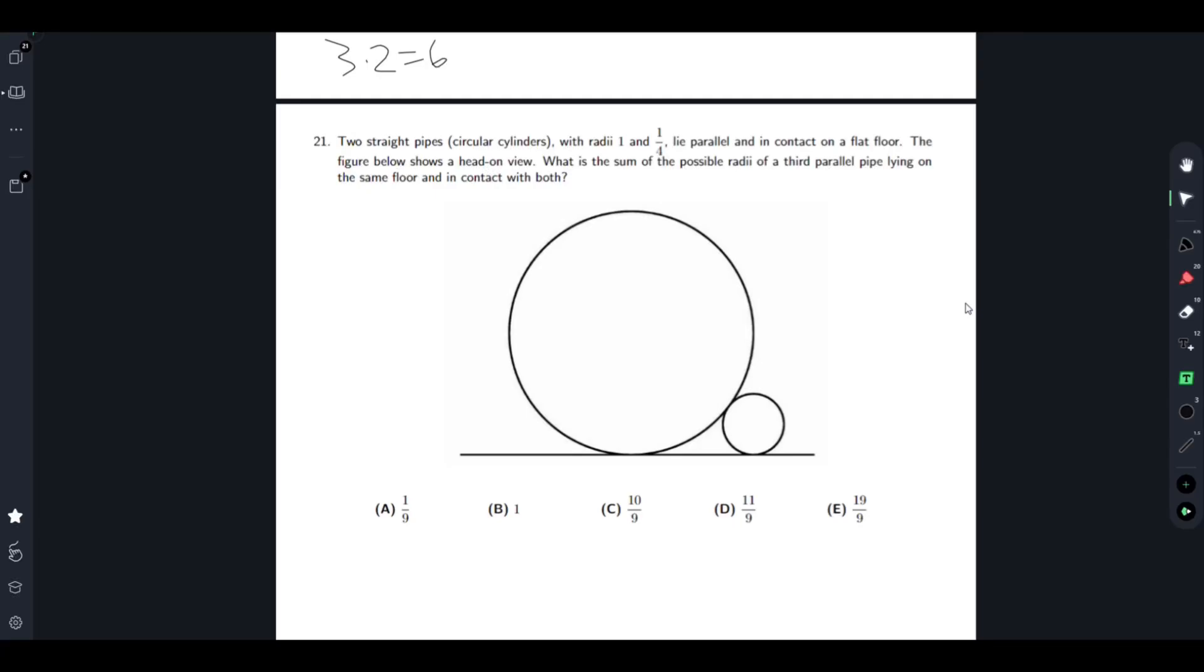Hello guys! Today we will be going through the 2024 MC10B problem 21. Two straight pipes with radius 1 and 1 fourth lie parallel in contact on a flat floor. The figure below shows a head-on view.